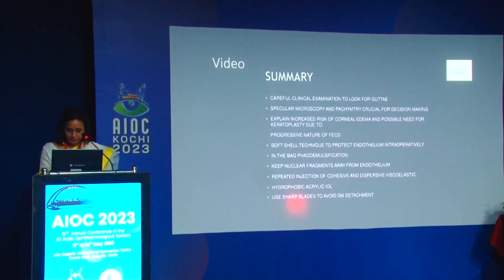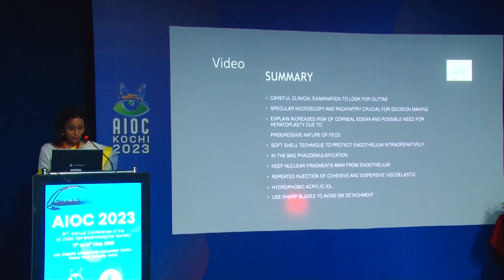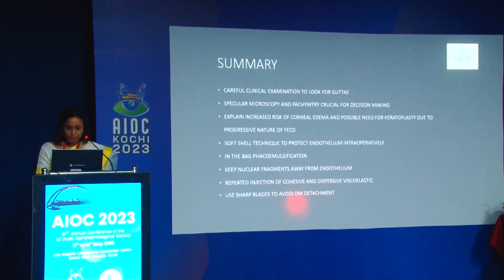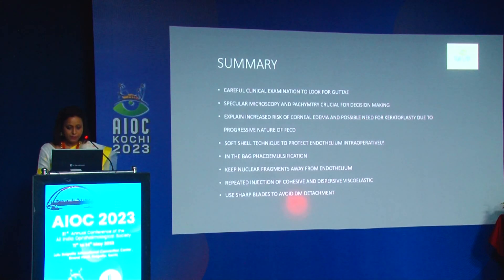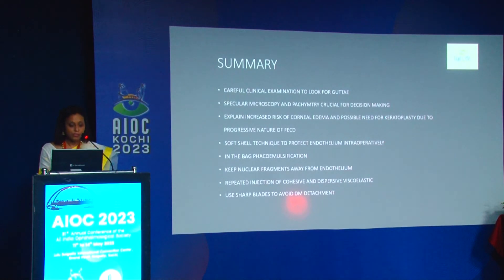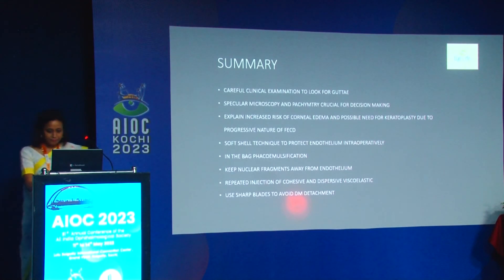To summarize: careful clinical examination looking for guttae; specular microscopy; explain the progressive nature of Fuchs endothelial dystrophy to the patient if doing cataract surgery alone. The soft shell technique is most important; in-the-bag phaco emulsification; keep nuclear fragments away from the endothelium; repeated injection of cohesive and dispersive viscoelastic; and use sharp blades to avoid Descemet membrane detachment. Thank you.